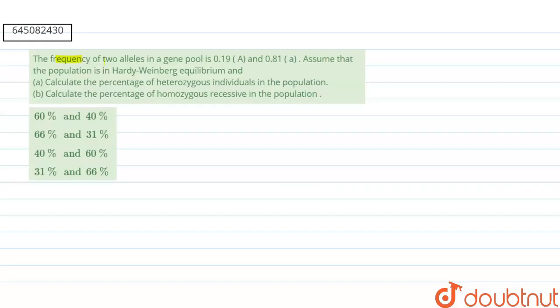Our question says that the frequency of two alleles in a gene pool is 0.19 and 0.81. Assume that the population is in Hardy-Weinberg equilibrium. Calculate the percentage of heterozygous individuals in the population and calculate the percentage of homozygous recessive in the population.